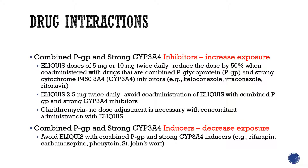For drug interactions: apixaban is a substrate of both CYP3A4 and P-gp. Inhibitors of CYP3A4 and P-gp increase exposure to apixaban and increase the risk of bleeding. Inducers of CYP3A4 and P-gp decrease exposure and increase the risk of stroke and thromboembolic events. For patients receiving Eliquis 5 milligrams or 10 milligrams twice daily, reduce the dose by 50 percent when co-administered with combined P-gp and strong CYP3A4 inhibitors such as ketoconazole, itraconazole, or ritonavir. For patients receiving 2.5 milligrams twice daily, avoid co-administration with combined P-gp and strong CYP3A4 inhibitors.